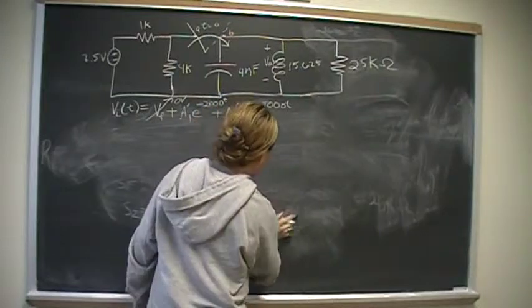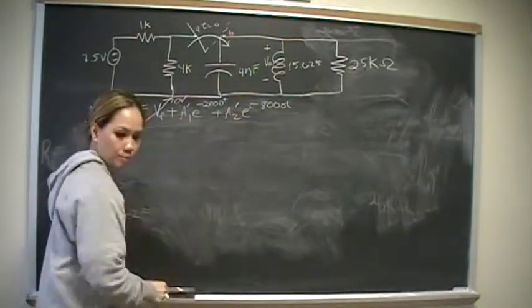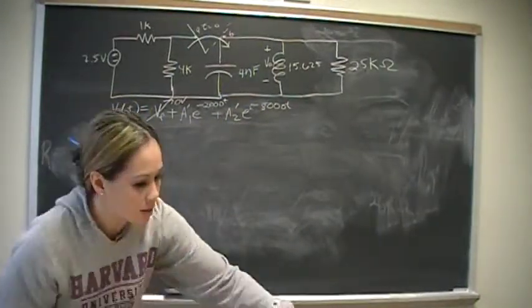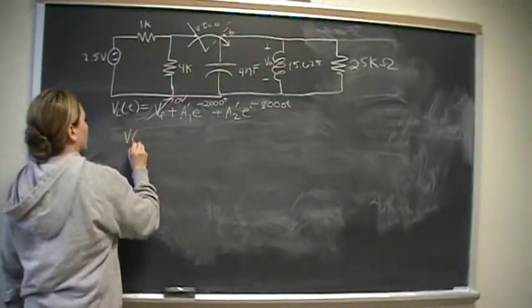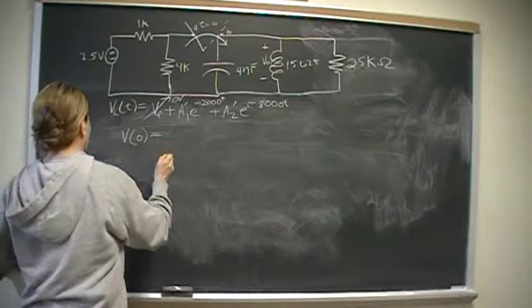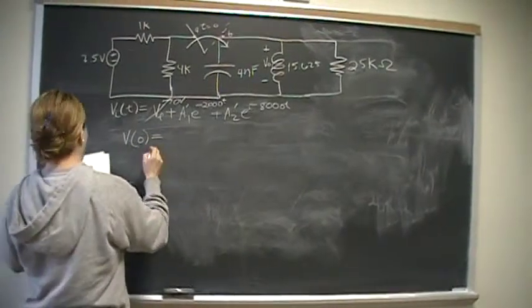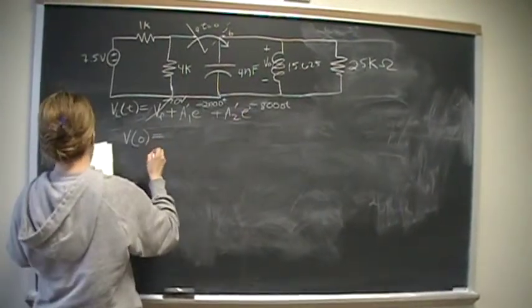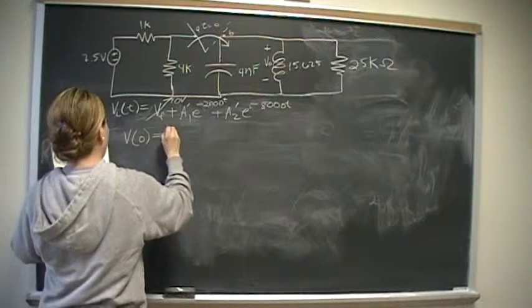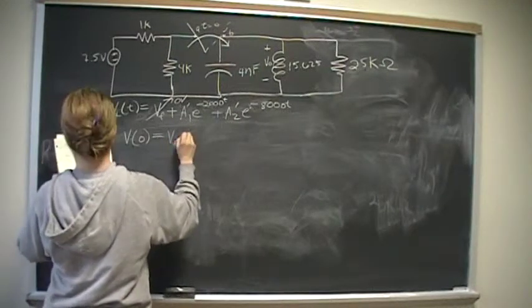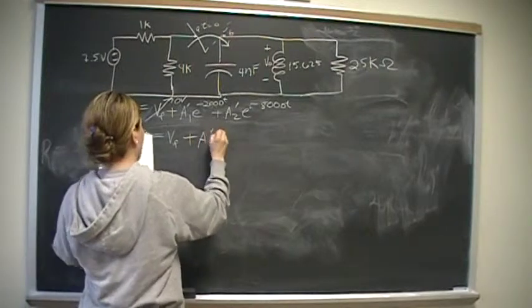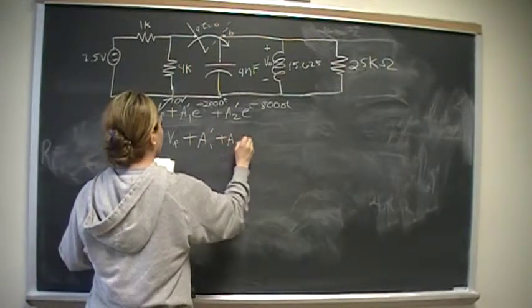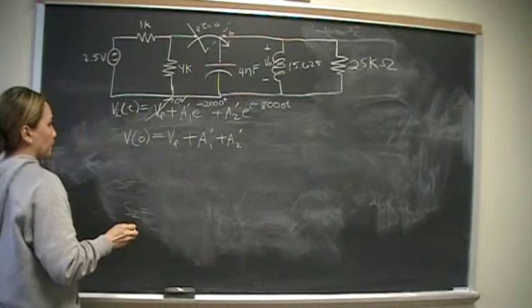Coefficient equations for the overdamp system is V of 0, equal to initial voltage across the parallel RLC circuit, is equal to V final, which we know is 0, plus A1 prime plus A2 prime.